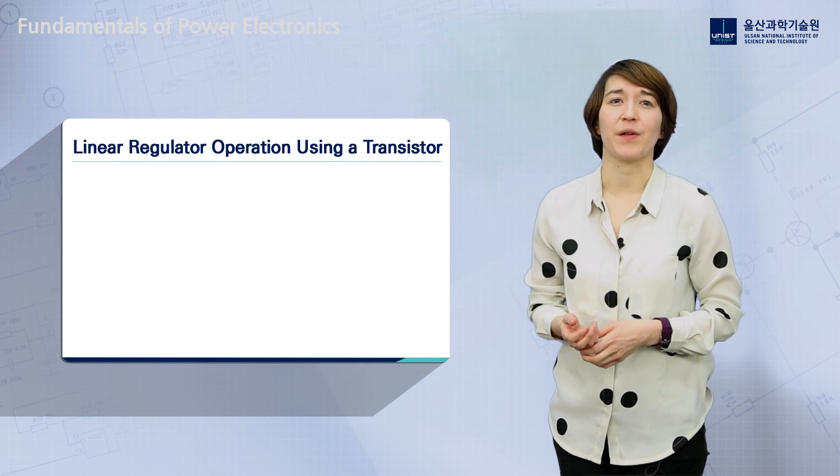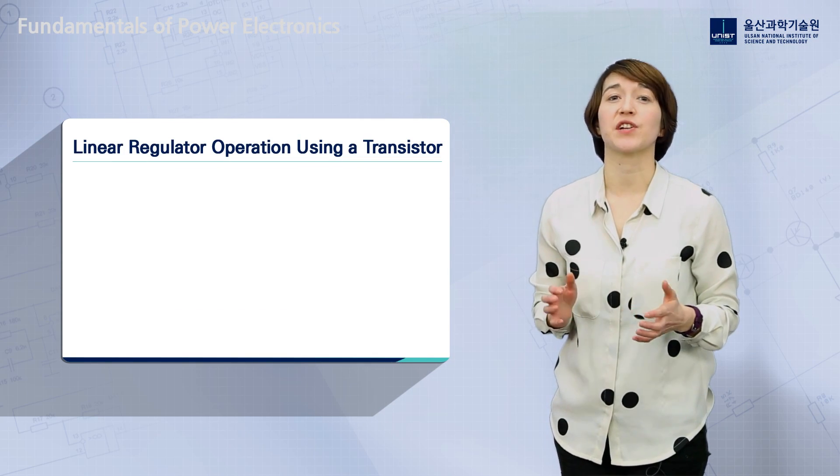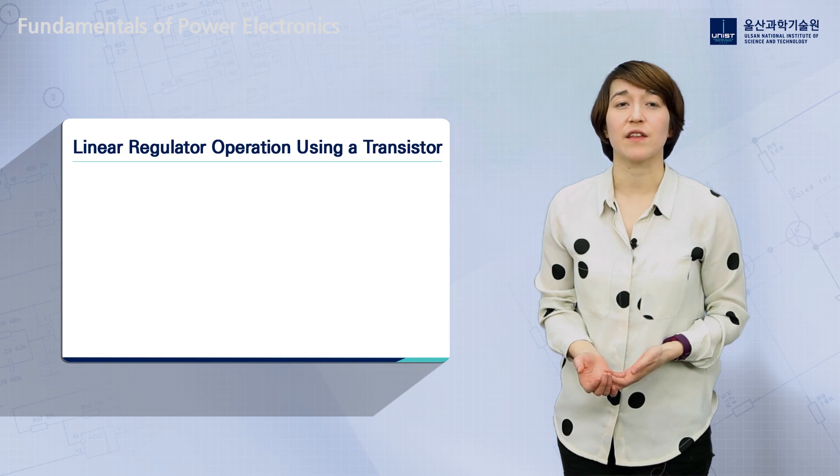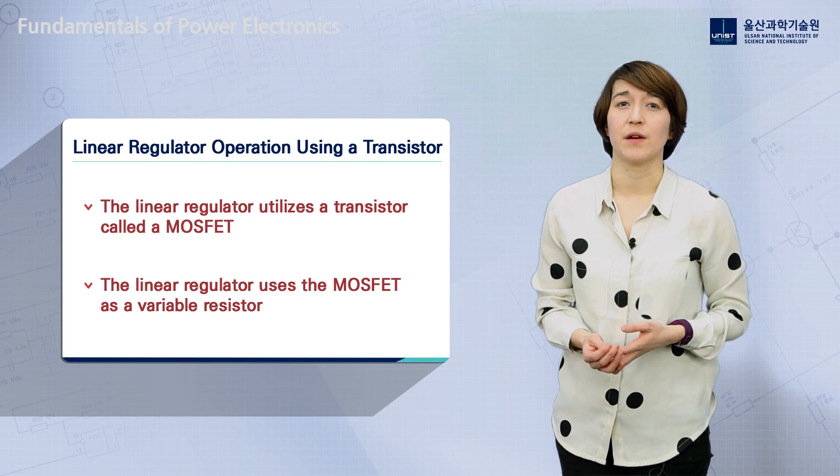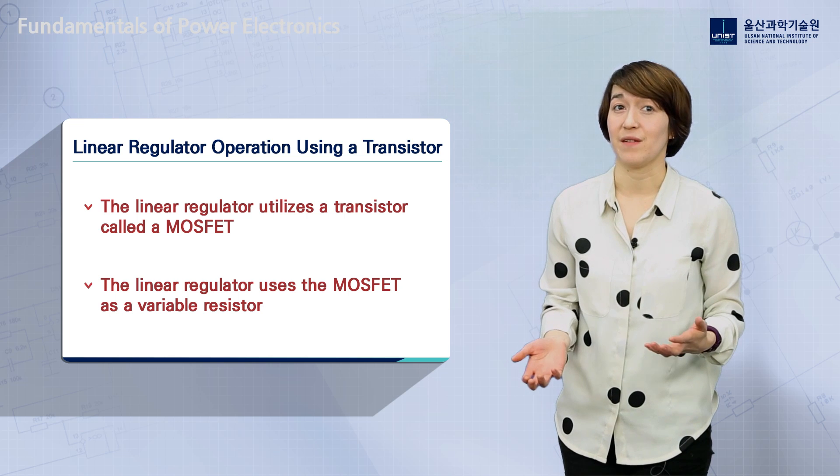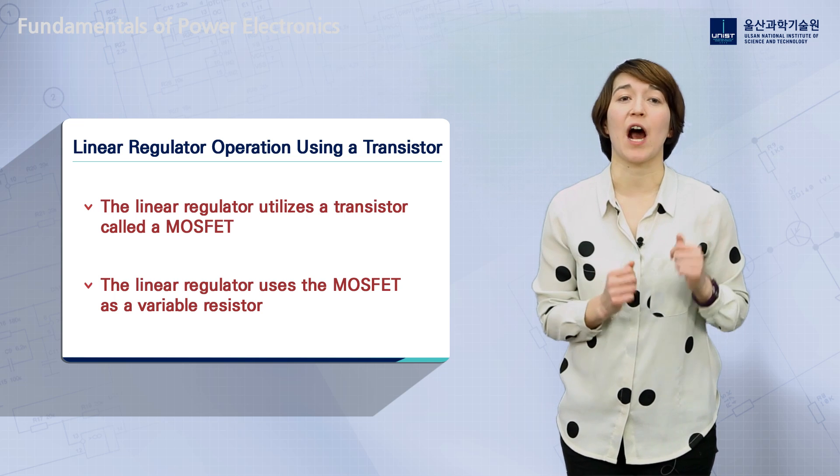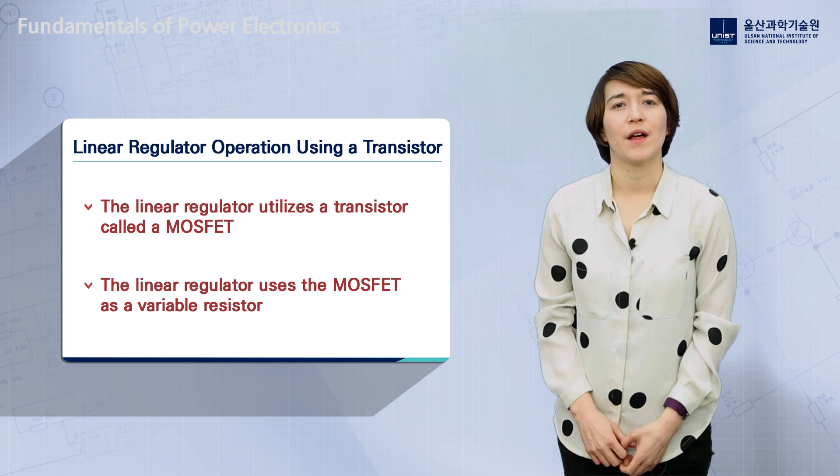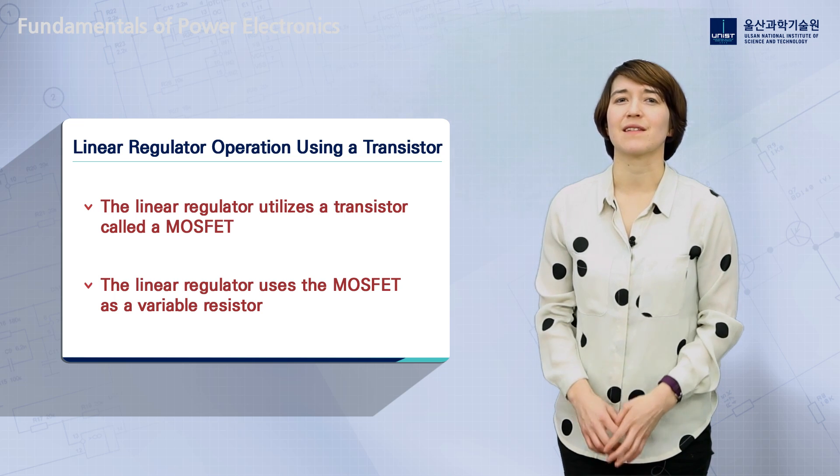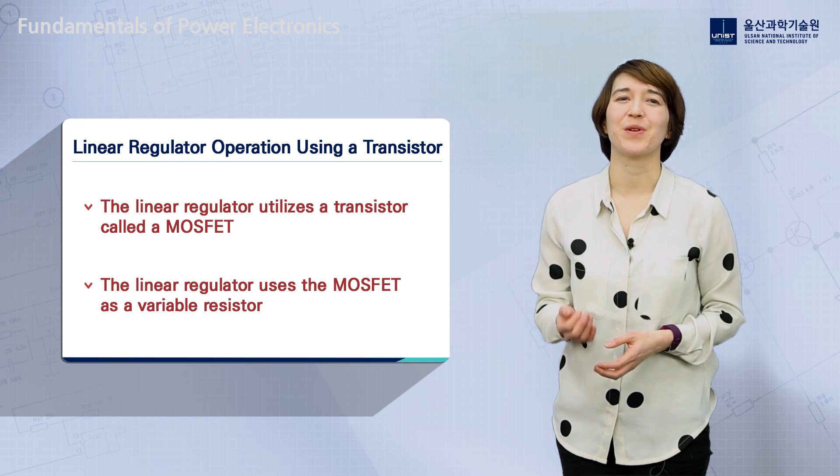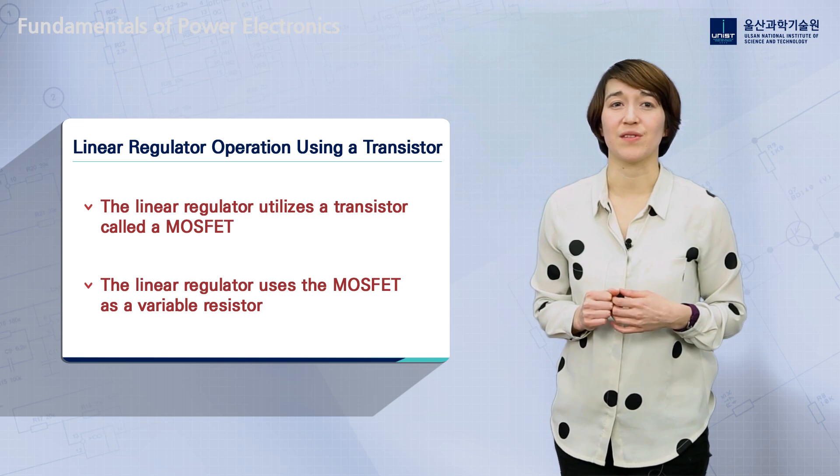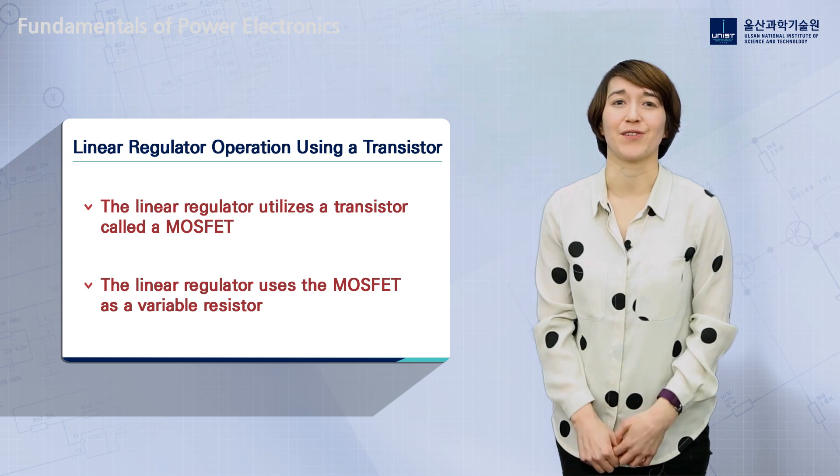Here, we will learn about the operation principle of a linear regulator, which steps down the voltage from one DC source to a DC load. The linear regulator is based on a resistor divider, but utilizes a transistor called a MOSFET as a variable resistor to accurately maintain a target output voltage. The operation of a MOSFET is a little complicated, but we will break it down and focus on how it is used in a linear regulator power converter.